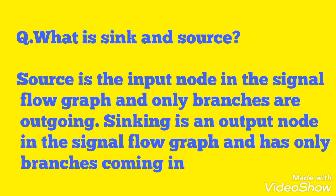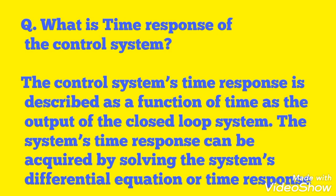What is sink and source? The source is the input node in the signal flow graph where only branches are going outside. The sink is the output node in the signal flow graph where only branches are going inside. The control system's time response is described as a function of time as the output of the closed loop system, and can be acquired by solving the system differential equation.